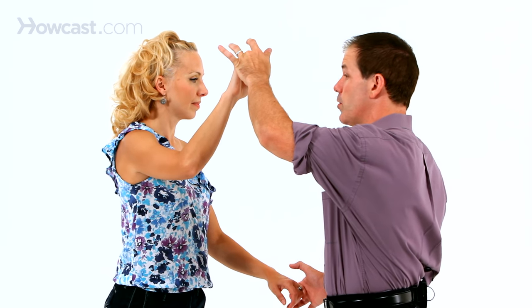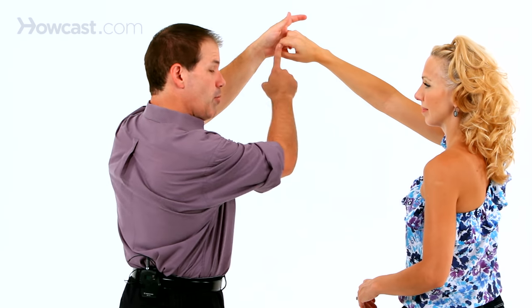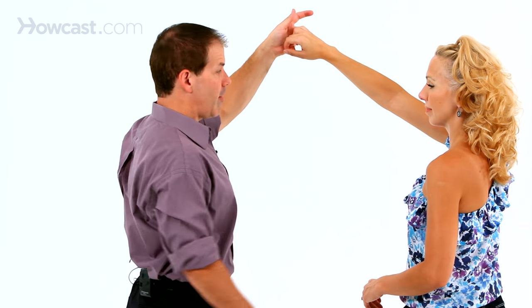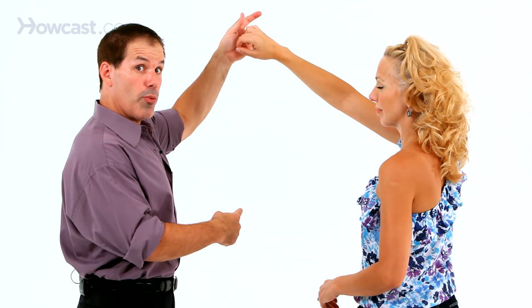She goes underneath in the first triple, triple step, but keep your left arm up leaders. You want to keep your left arm up so you have space to go underneath. In the second triple, you're going to get all the way through going to your left, triple step.